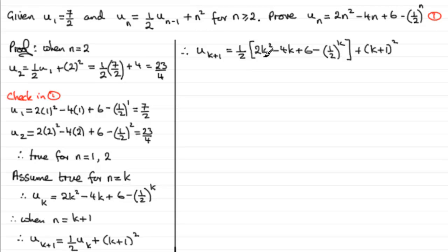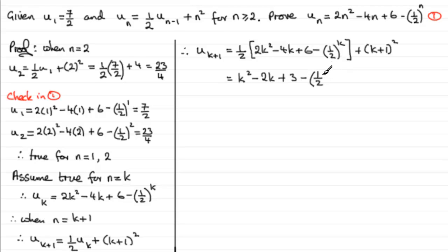Let's expand the bracket. Half of 2k² is k². Half of minus 4k is minus 2k. Half of 6 is plus 3. When we take half times minus one-half to the power k, we add the powers: one-half to the power 1 times one-half to the power k gives minus one-half to the power k plus 1. Then we have plus (k plus 1) squared, which I'm going to leave unexpanded for now.